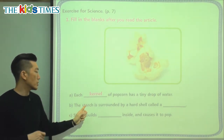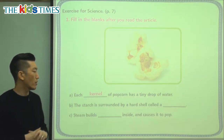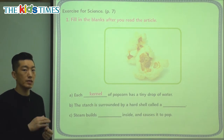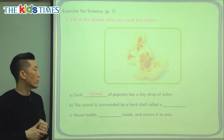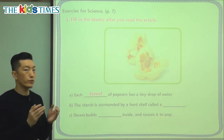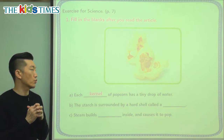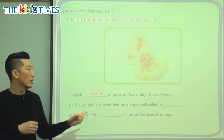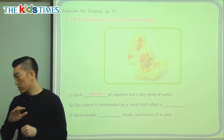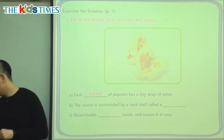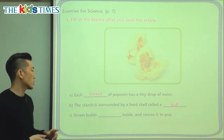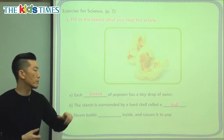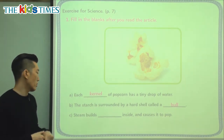The starch is surrounded by a hard shell called a — what did we say is the outer shell? Not the soft starch that contains the drop of water, but the outer part we talked about many times — is called the hull. So the starch is surrounded by a hard shell called a hull.